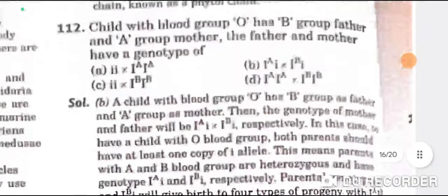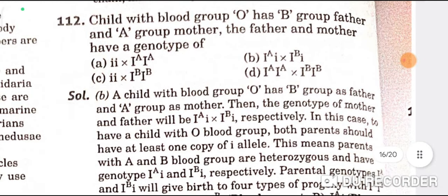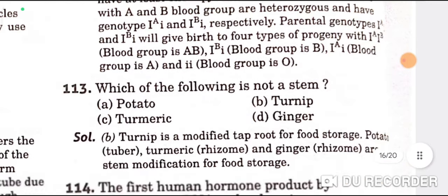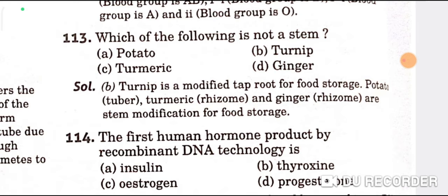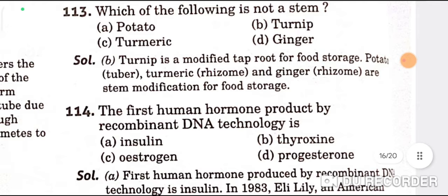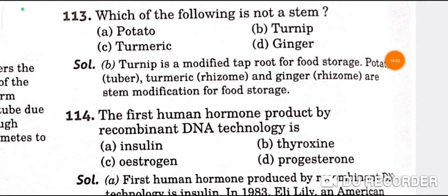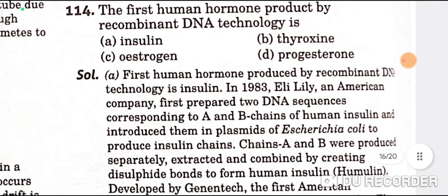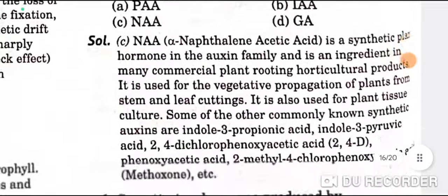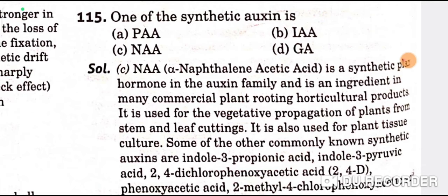A child with blood group O has a B-group father and A-group mother; the genotype of the father and mother is IAi × IBi. Turnip is not a stem — it is a modified tap root; while ginger, potato, and turmeric are underground stems. The first human hormone produced by recombinant DNA technology is insulin — A is the correct option. One of the synthetic auxins is NAA (naphthalene acetic acid). Secretin is a hormone produced by the duodenum.